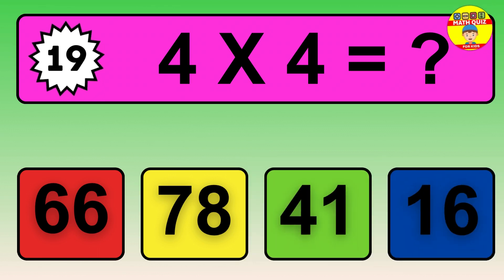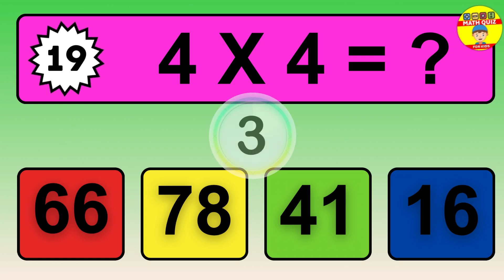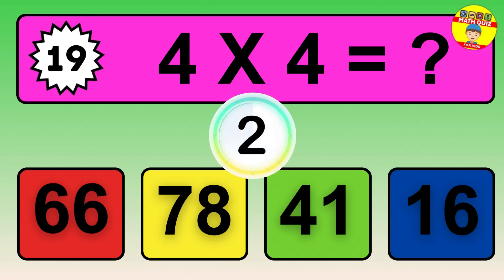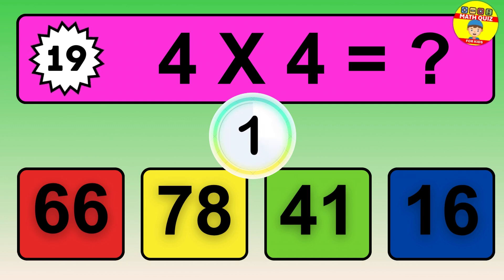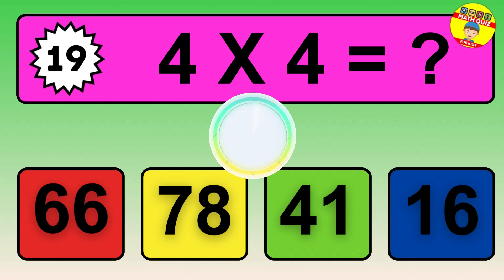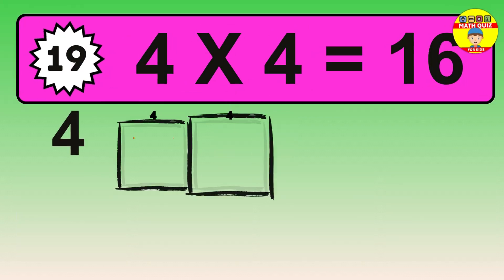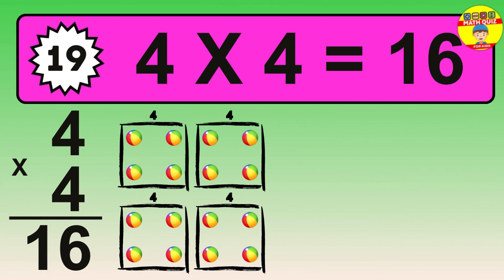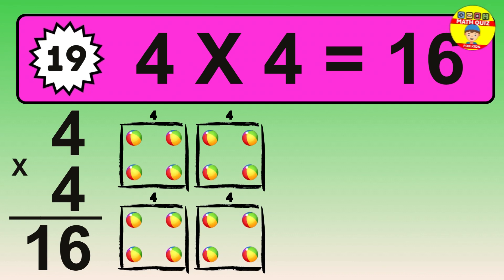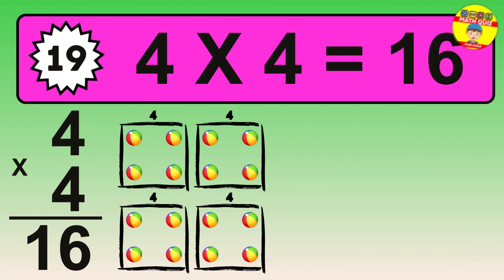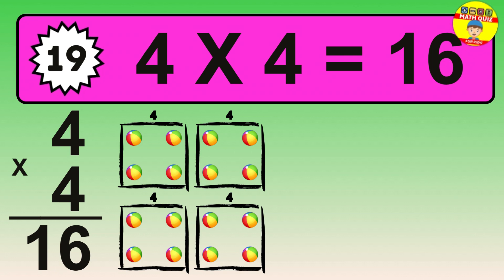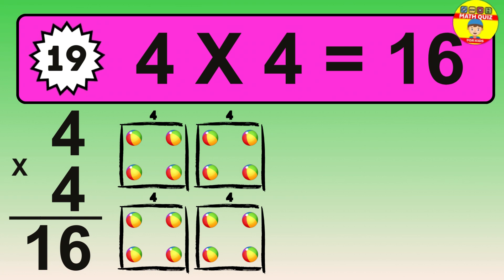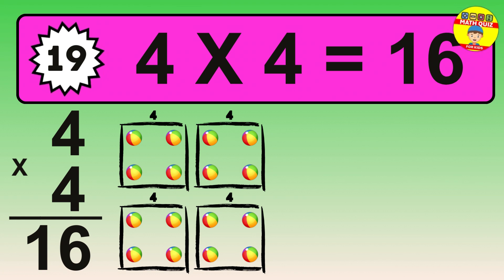Question 19. Four times four equals what? So the answer is four times four is sixteen. To calculate, we have four groups with four balls each one. So how many balls do we have? Sixteen balls.